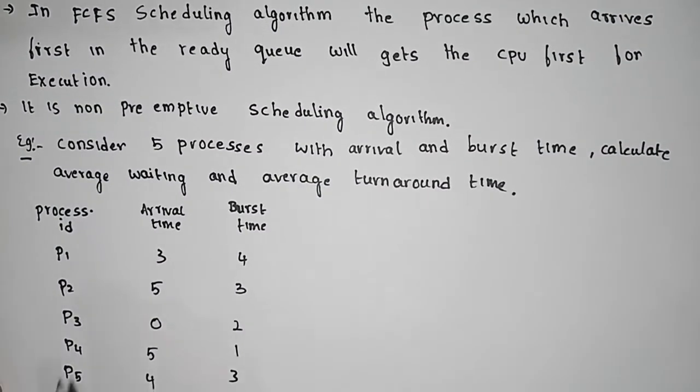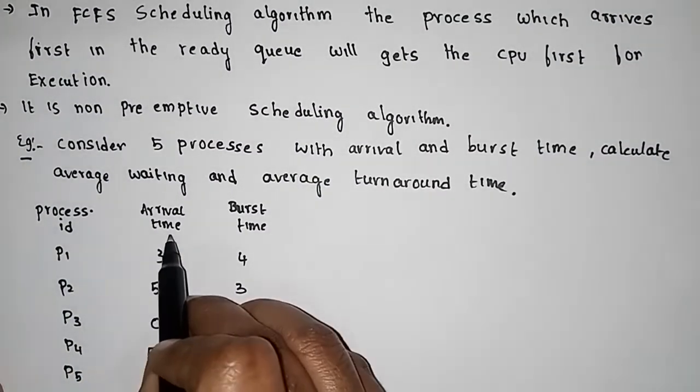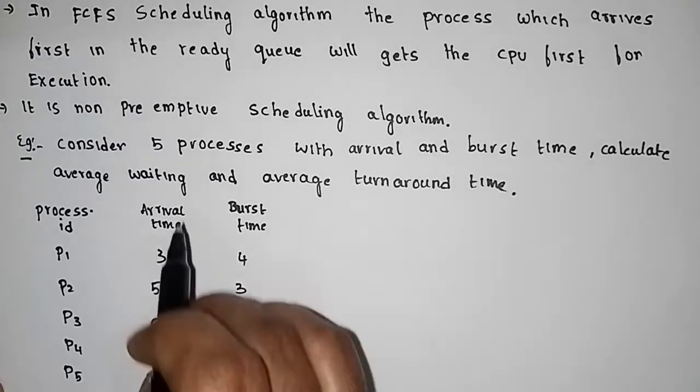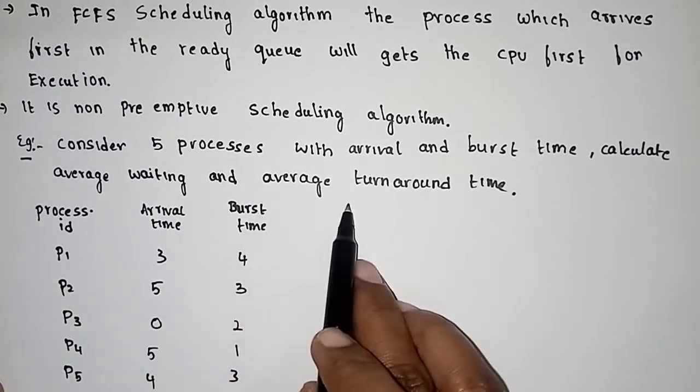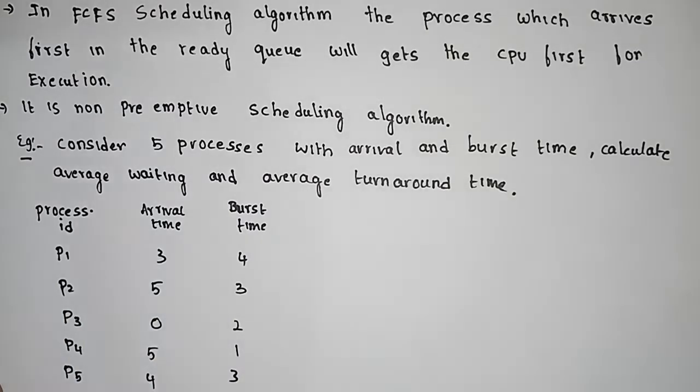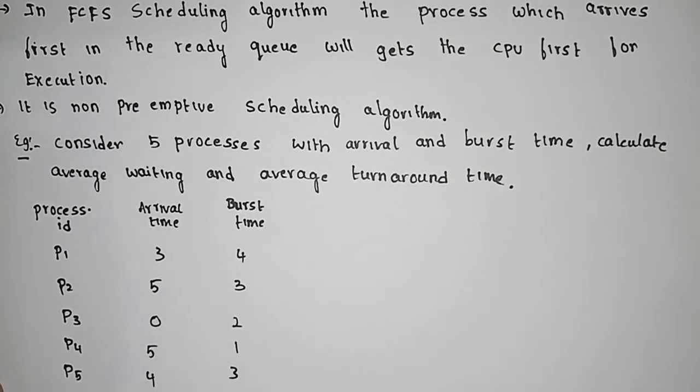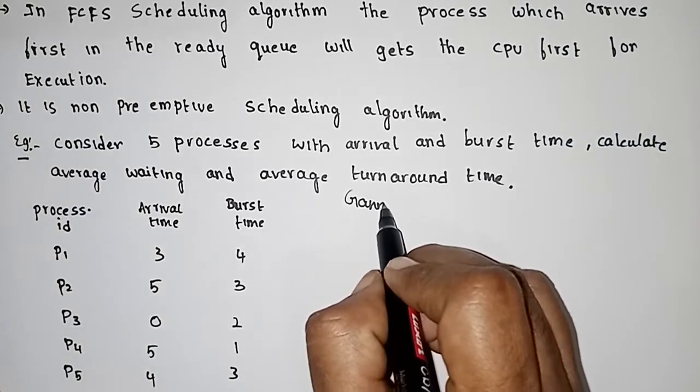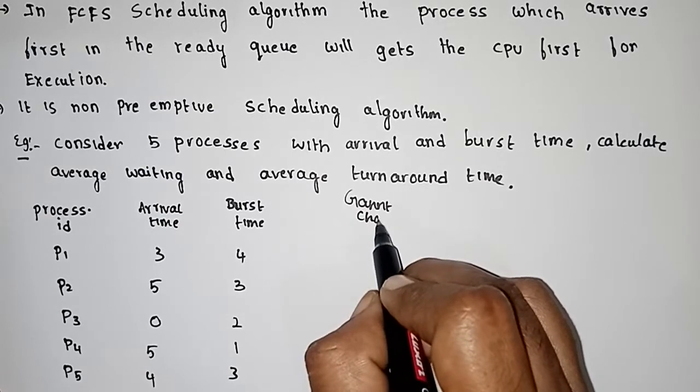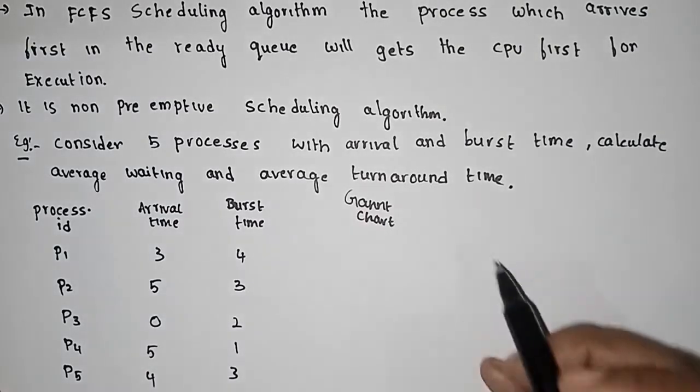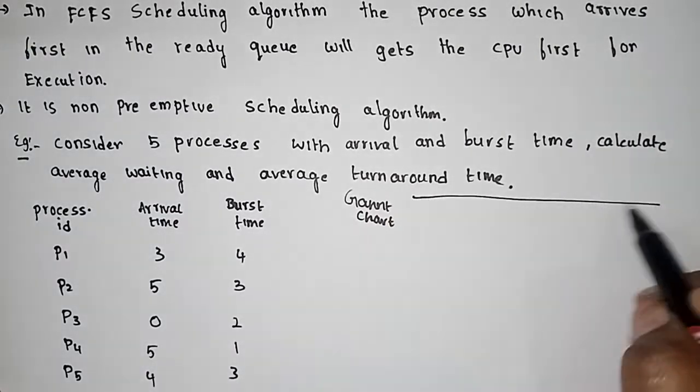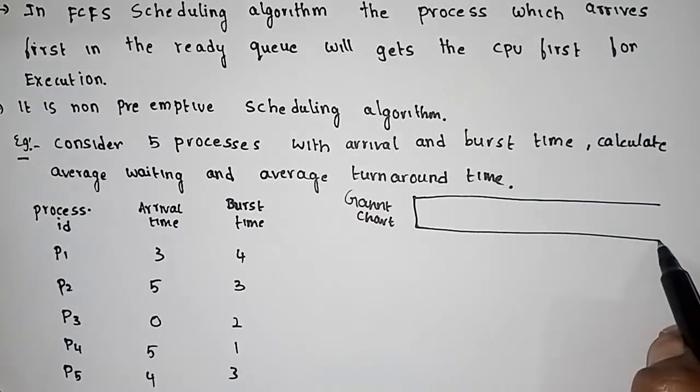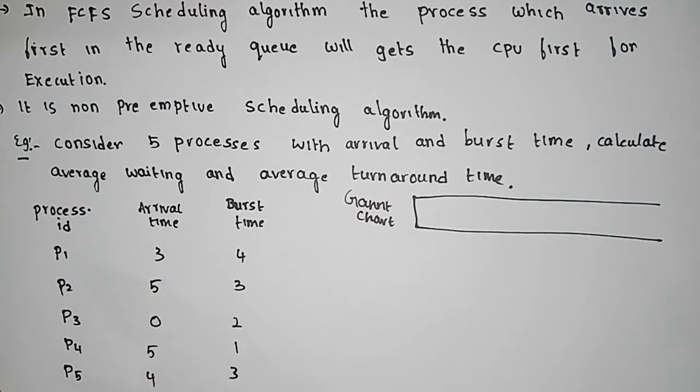Here we have five processes with arrival time and burst time. We have to calculate the average waiting time and average turnaround time. First we prepare the Gantt chart, then do simple mathematical calculations.